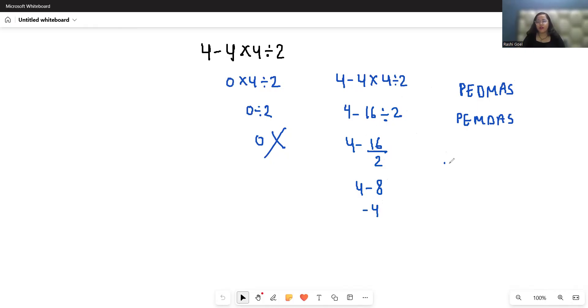Some people have doubt if we first solve the division. So 4 - 4 × 4 ÷ 2. 4 ÷ 2 gives us 2. 4 - 4 × 2. 4 × 2 = 8. 4 - 8, that is -4.